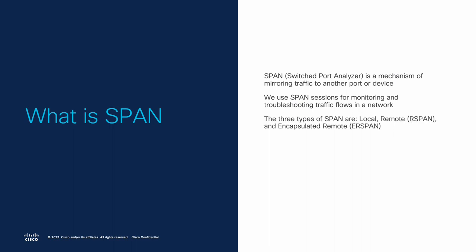In general, there are three types of SPAN: local, remote, and encapsulated remote. However, in ACI, we only utilize two of these — local and ERSPAN.